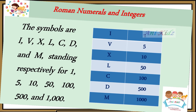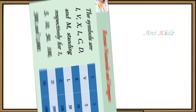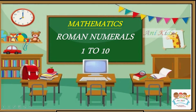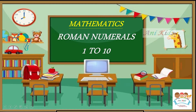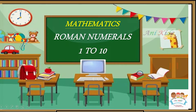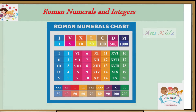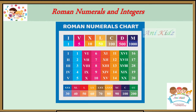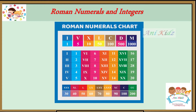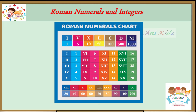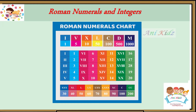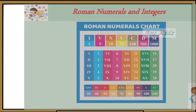In later, higher classes, you can learn this in very brief. In this video, you can see what Roman letters come for 1 to 10. See, in this chart, they are given from 1 to 20, as well as 1, 5, 10, 50, 100, 500, and 1000 — those letters represent the numbers. Come, let's go and see the 1 to 10 numerals.